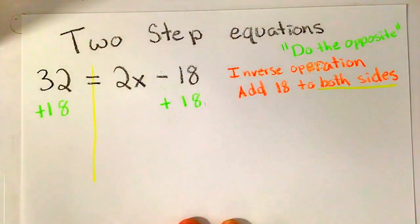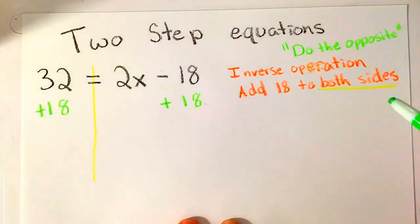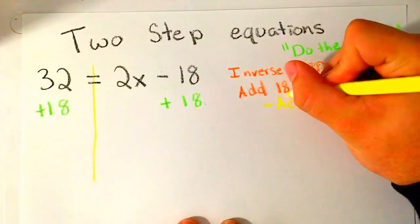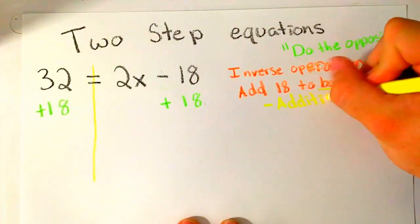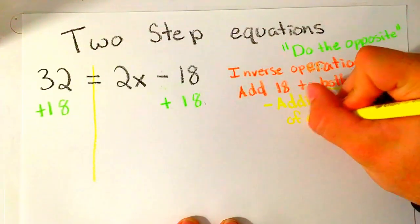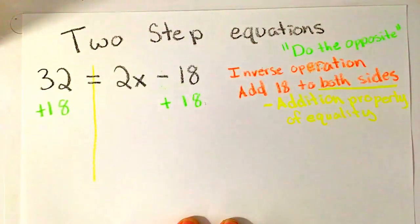What it means to have a property of equality is that you do the same thing to both sides. That is how we get away with this next step. When we add 18 to both sides, this is called the addition property of equality. All that means is that we add to keep things equal.